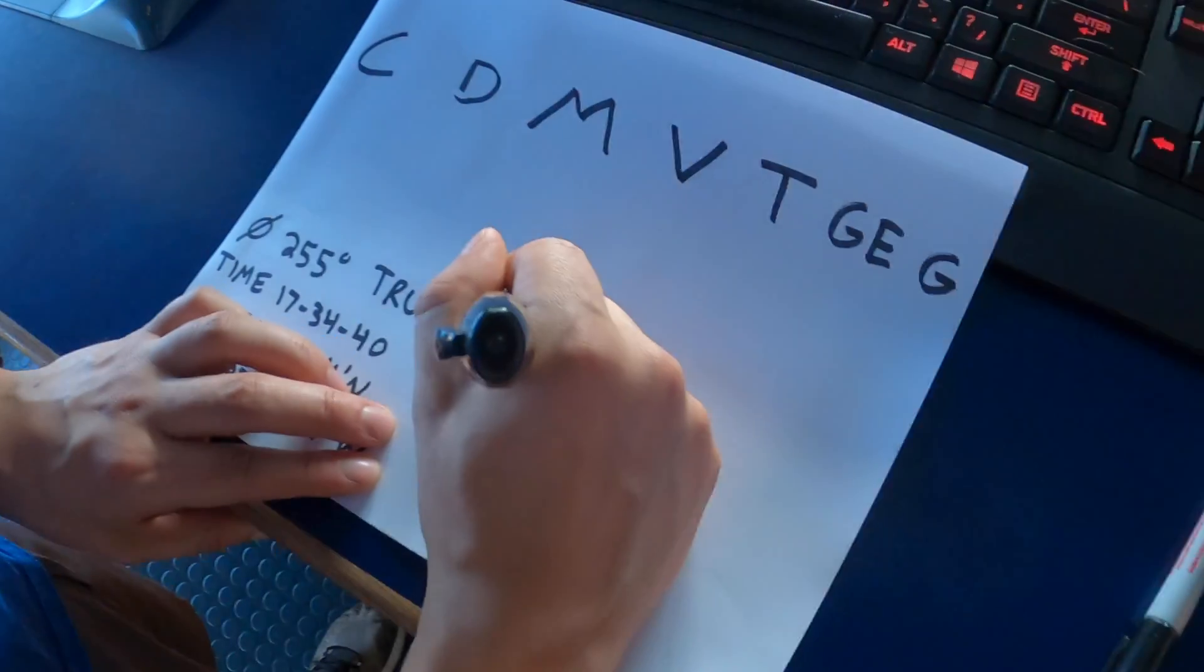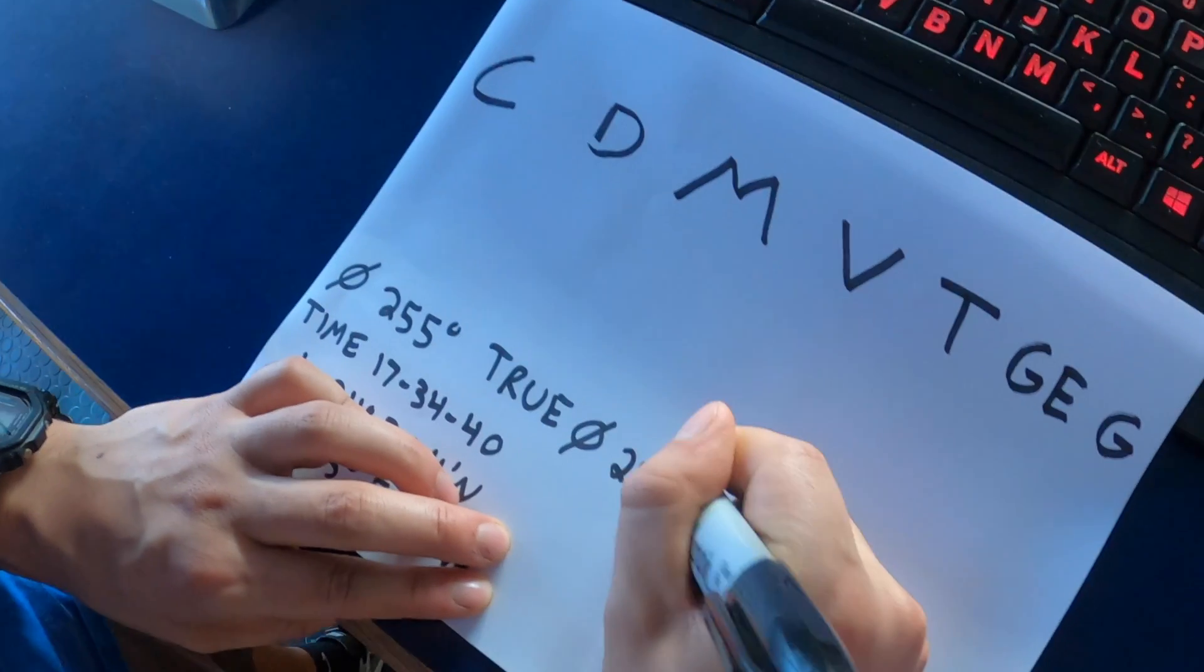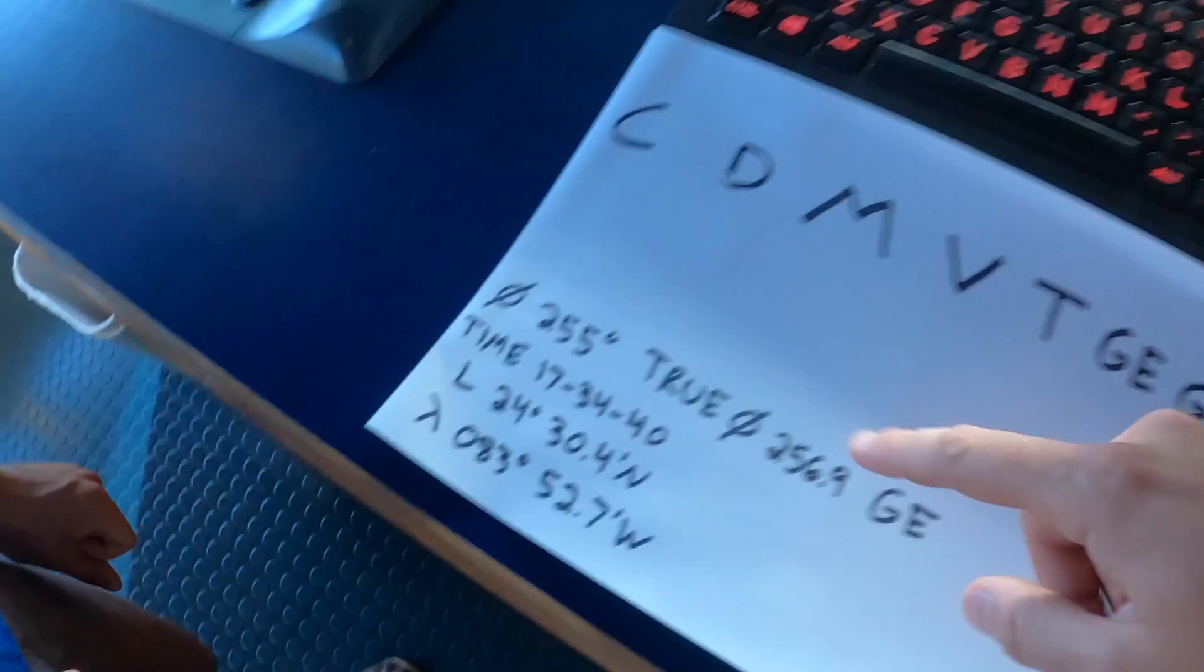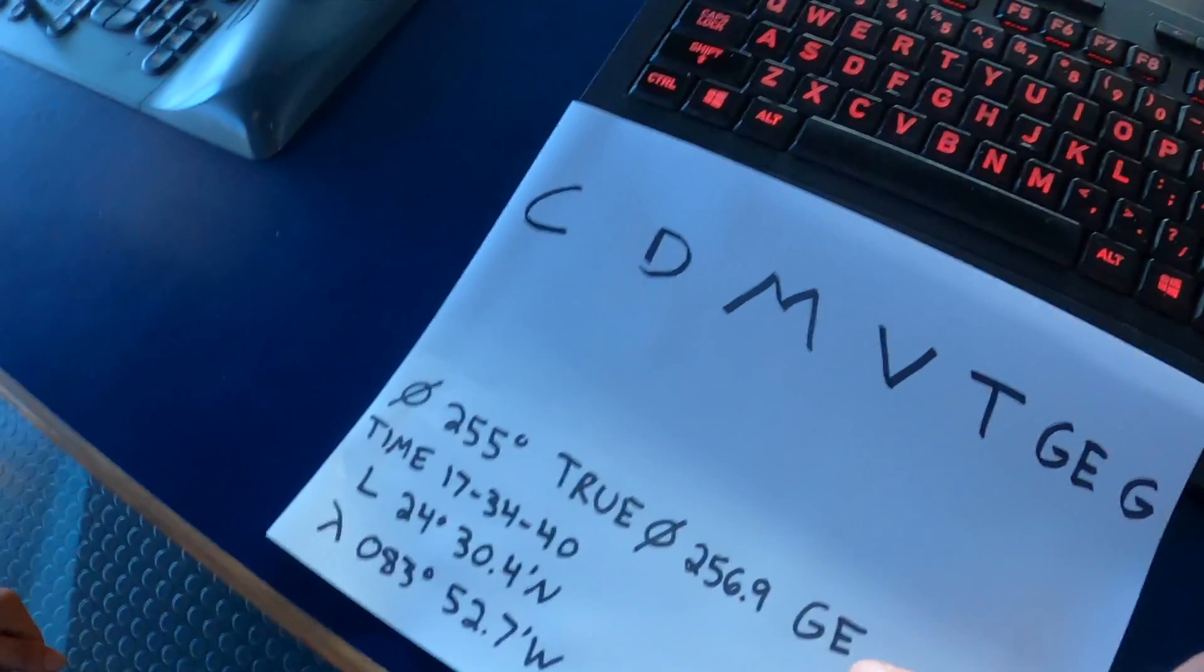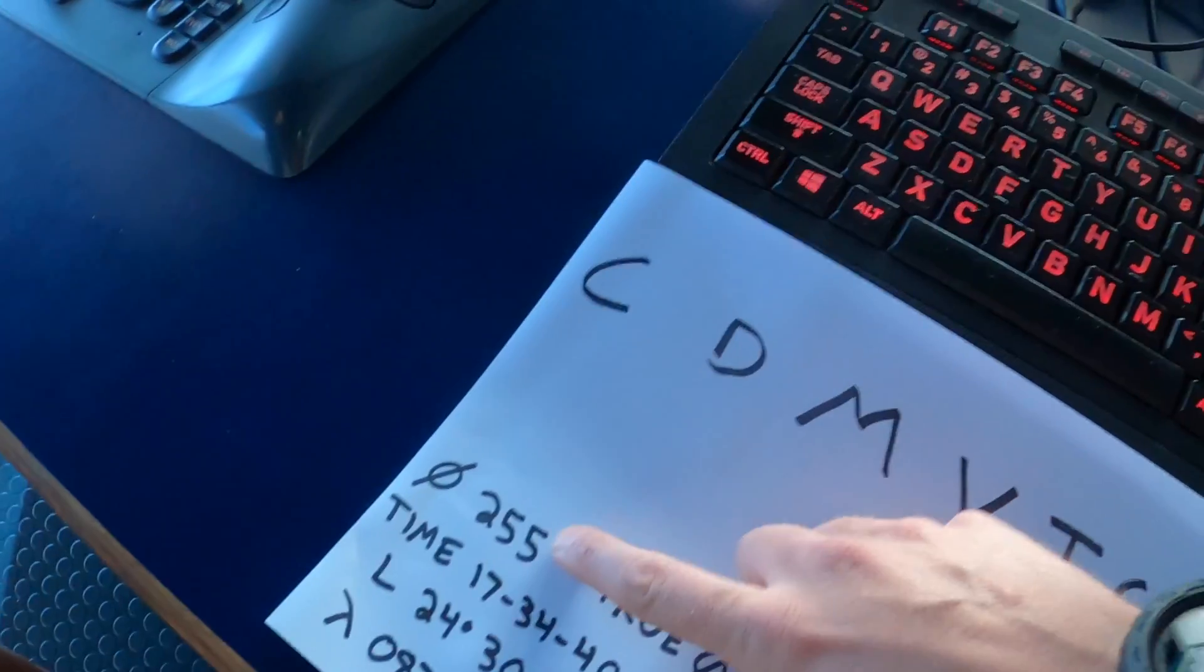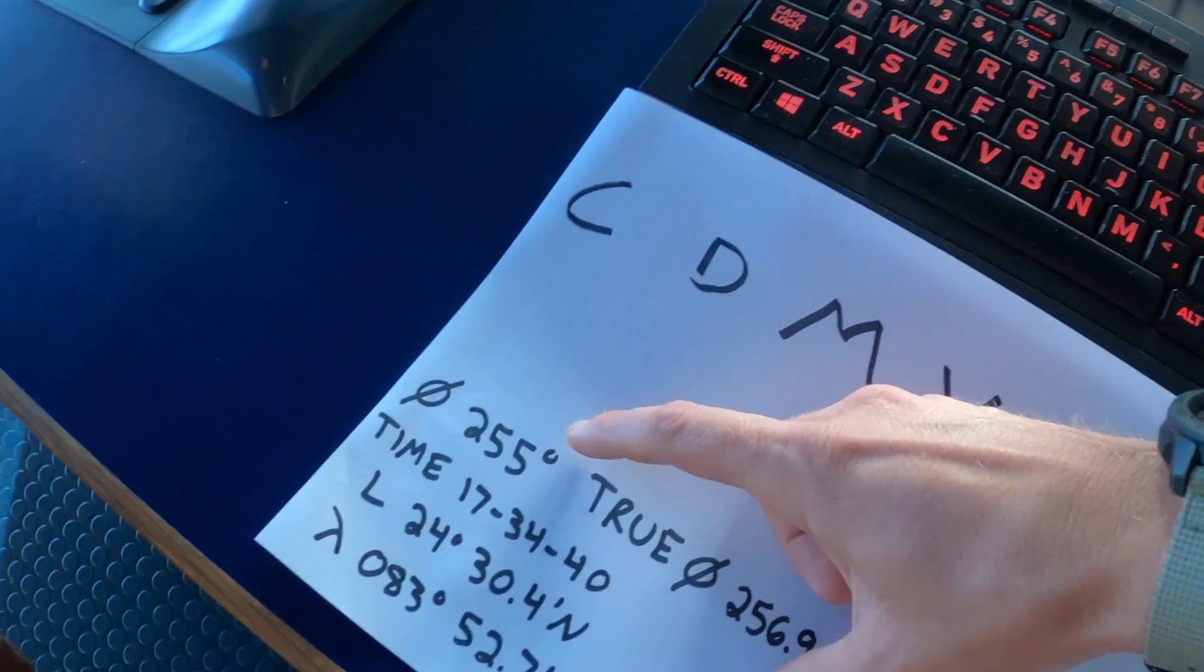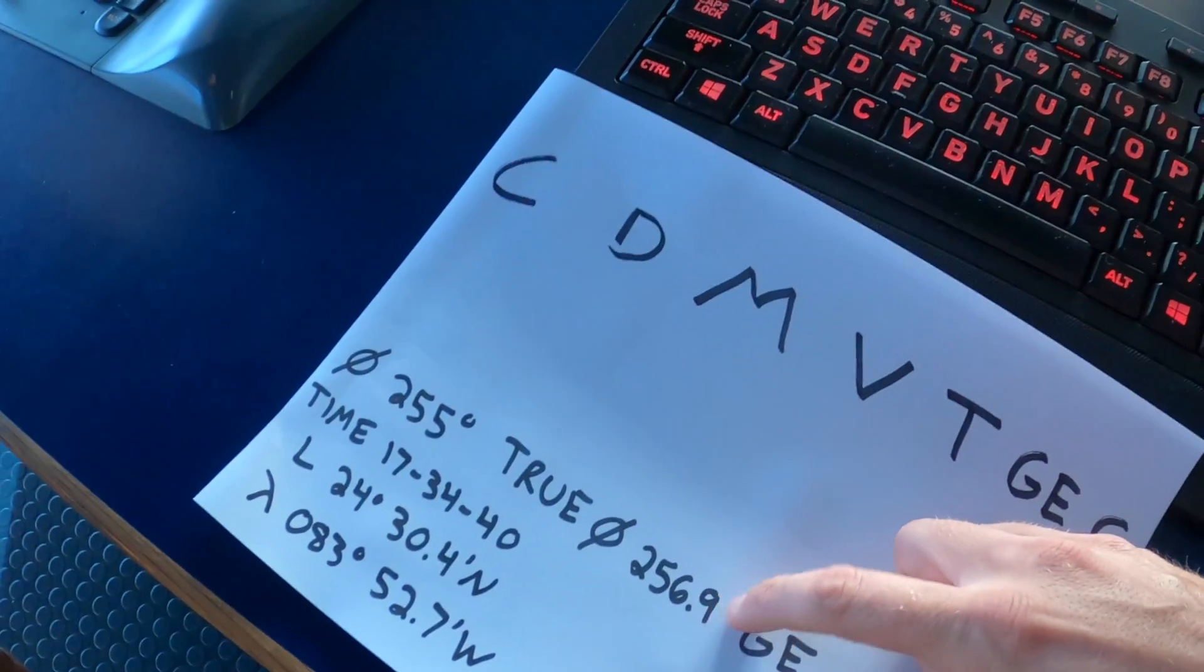So we'll write that as the true bearing. So what this means is on the port gyro repeater, we took a bearing of the sun and we came up with 255 degrees. But what the actual true bearing was was 256.9 degrees.